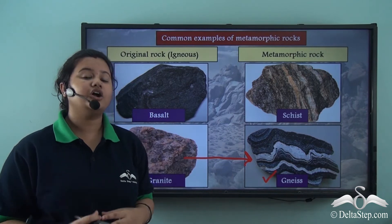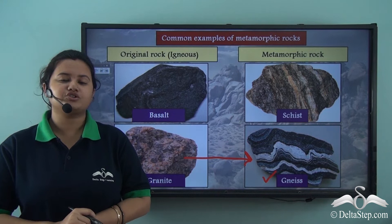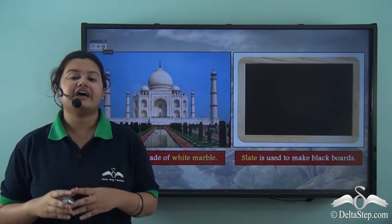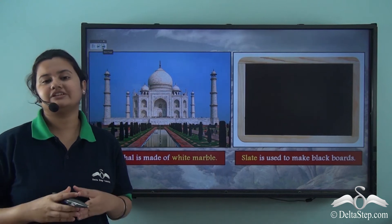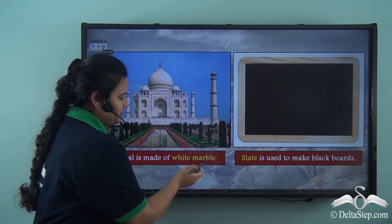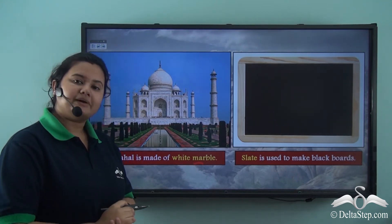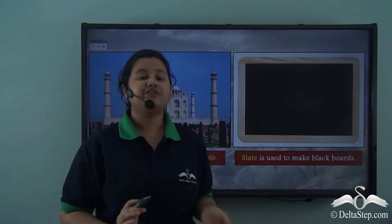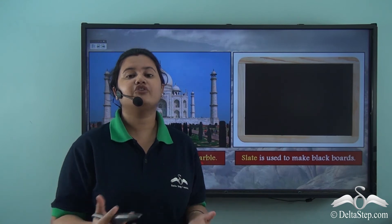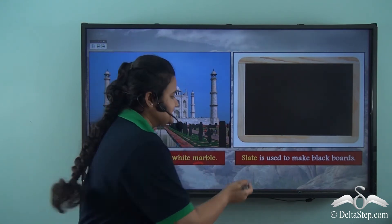Now let's discuss the importance of metamorphic rocks. As discussed, Taj Mahal is composed of white marble, and marble is a type of metamorphic rock. We also commonly see black boards in our classrooms — a type of metamorphic rock, slate, is used to make blackboards.